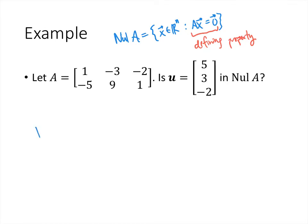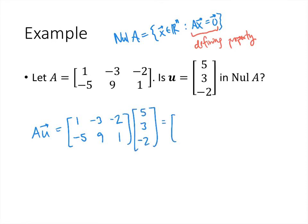We multiply A times u: the matrix is [1, -5, -3; 9, -2, 1] and u is [5, 3, -2]. Going across the first row: 1×5 + (-3)×3 + (-2)×(-2) = 5 - 9 + 4 = 0. In the second row: (-5)×5 + 9×3 + 1×(-2) = -25 + 27 - 2 = 0. Since we got the 0 vector, the answer is yes, u is in the null space.